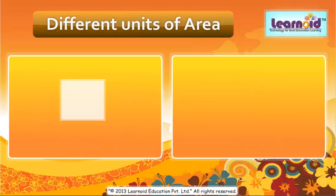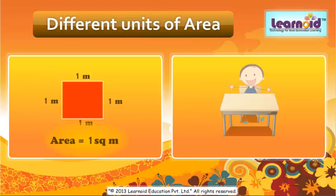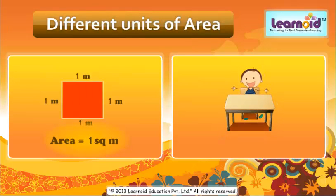Area of a square with one meter sides is a square meter. For example, a square table is about one square meter.